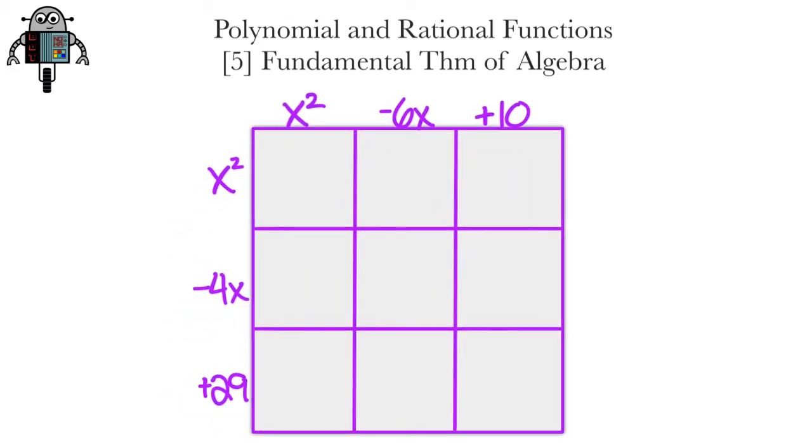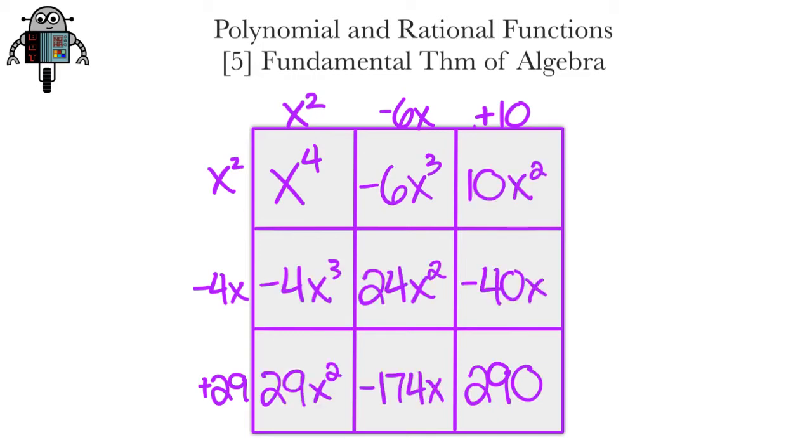I'm setting up a 3 by 3 Punnett square for that. For the top left box, we have x squared times x squared, which is x to the 4th. For the bottom right box, we have 10 times 29, which is 290. And here's the rest of the boxes. Look, there's a diagonal pattern with the terms. That'll make adding up the terms easier. Oh, and just to be clear, the product of these two trinomials is the sum of all of the terms inside this Punnett square.